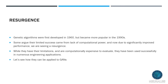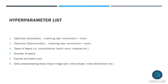Let's talk about the resurgence of these algorithms. Genetic algorithms were first formulated in 1960 and became more popular in the 1990s. Some argue the earlier lack of success came from limited computational power, and now that we have more compute, they're witnessing a resurgence. They have some limitations and are computationally expensive, but they've been successfully used in many cases. Now let's talk about how they get applied to GANs.